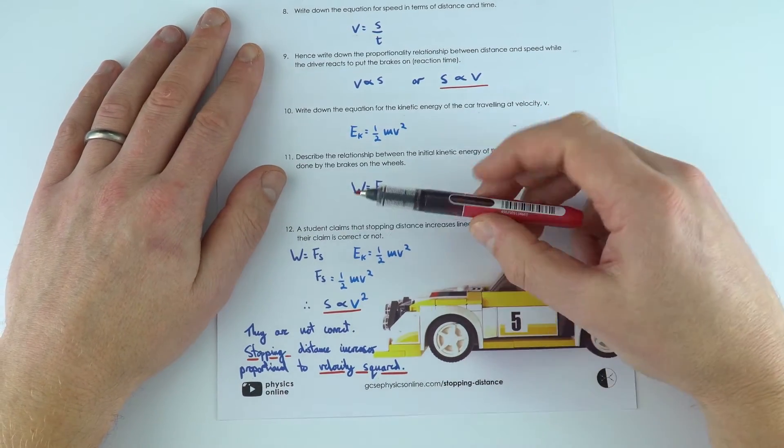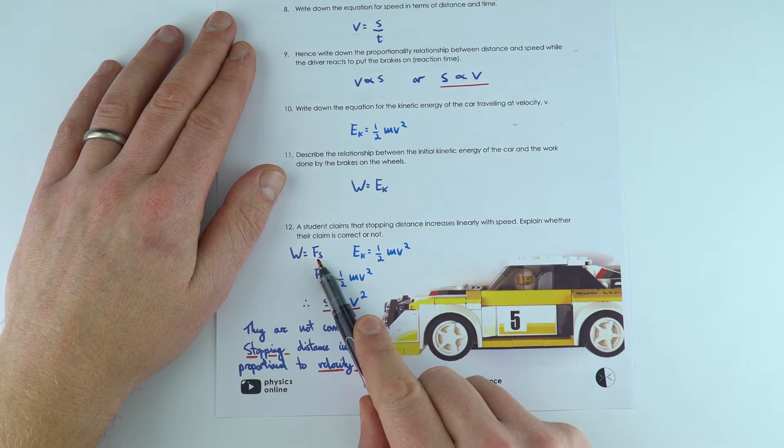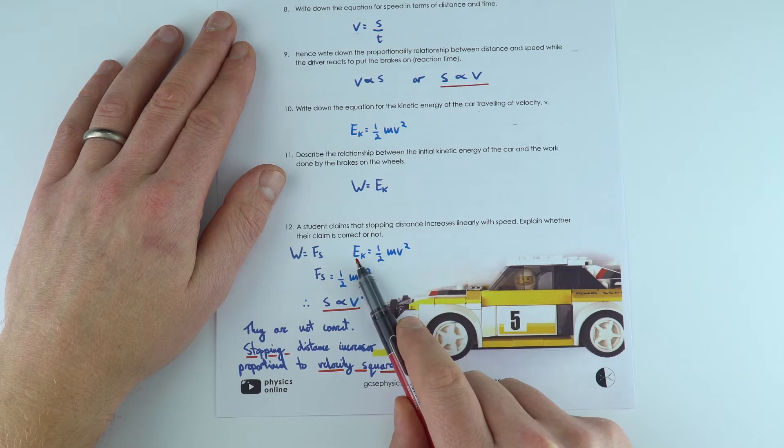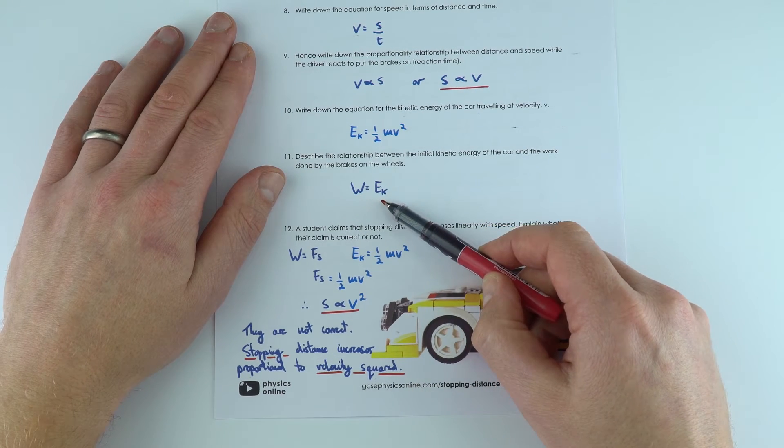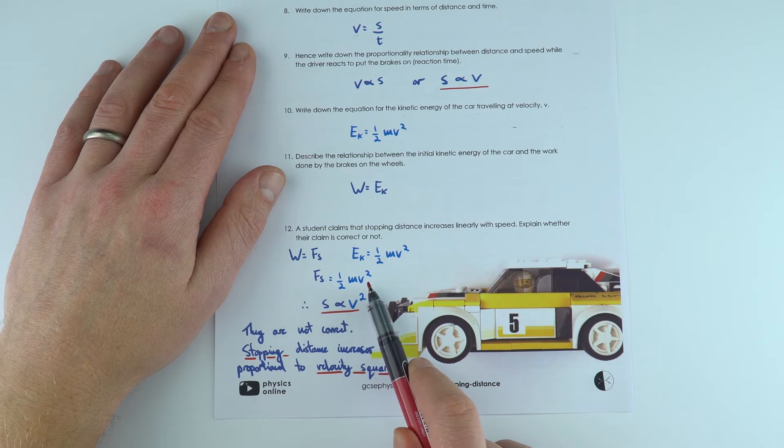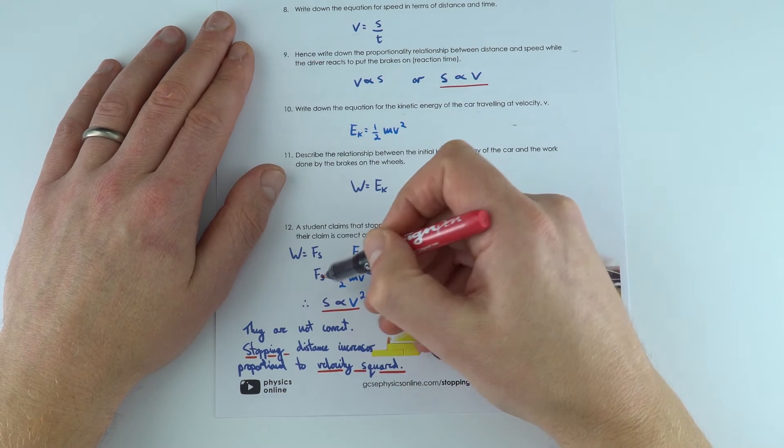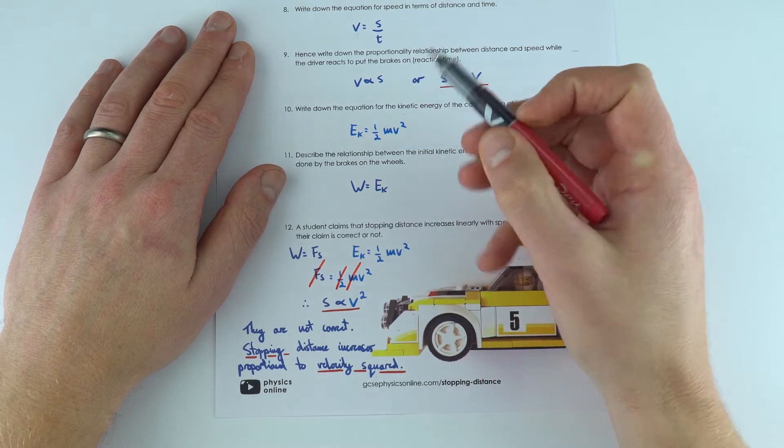Now this one here again gets quite advanced, but what we're saying is that the work done is equal to the force times the distance, and the kinetic energy is a half mv squared. And because the work done is equal to the size of the kinetic energy, we can say that the force times the distance is equal to a half mv squared. And provided we've got a constant force by the brakes, the car stays at a constant mass, and a half is just a constant, s is proportional to v squared.